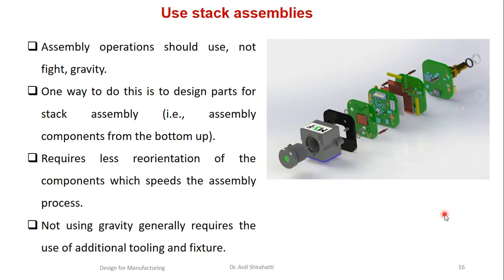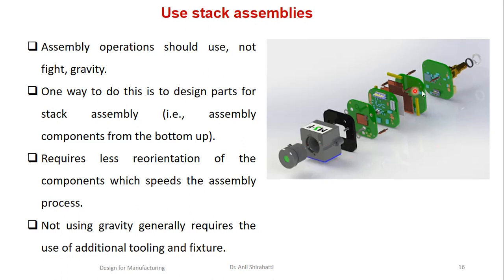Next, use stack assembly. Assembly operations should use, not fight, gravity. One way to do this is to design parts for stack assembly — assembling components from bottom to top. This requires less orientation of components, which speeds up the assembly process. Not using gravity generally requires additional tooling and friction. For example, in an exploded view of an electronic assembly, parts are stacked one above the other in sequence to get the final assembly. This stacking assembly sequence helps reduce assembly cost and time.